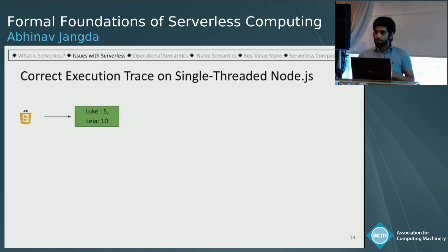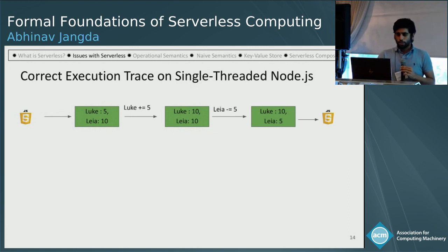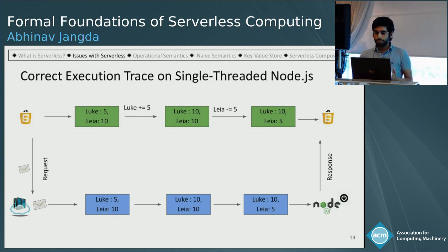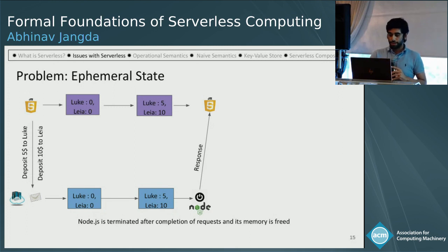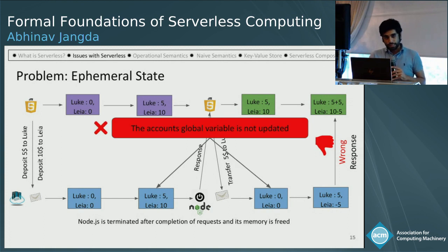Let's see how that transaction looks in JavaScript. First, the amount of Luke in accounts will be incremented, and then the amount of Leia will be decreased. On a single Node.js server, when the platform receives the request it should follow the same execution trace. However, on a serverless system, during the previous deposit requests, the serverless platform starts a Node.js process and ends it after updating, freeing that process's memory. During the transfer request, the Node.js process starts from an initial state where both Luke and Leia's amounts are zero, because the account is stored in a global variable and wasn't persisted.